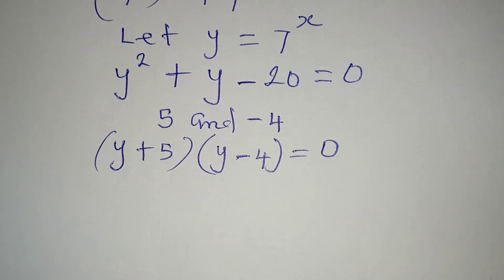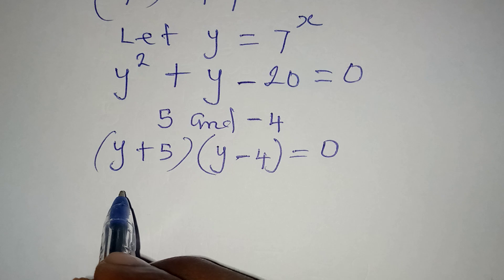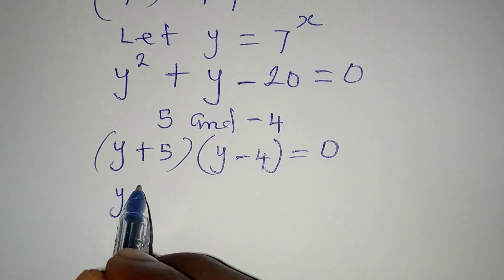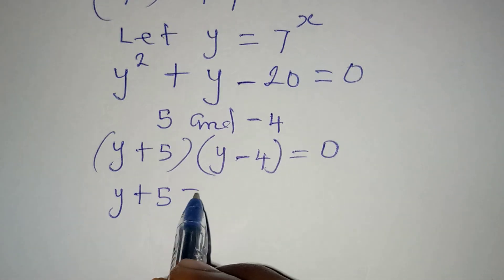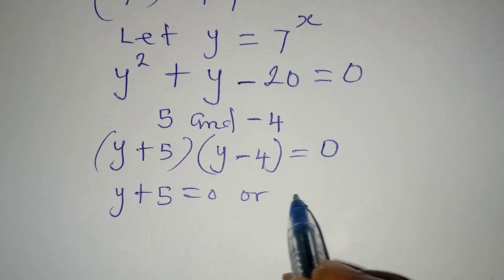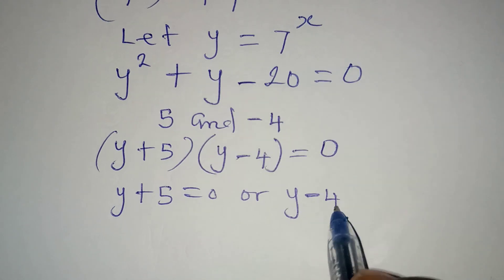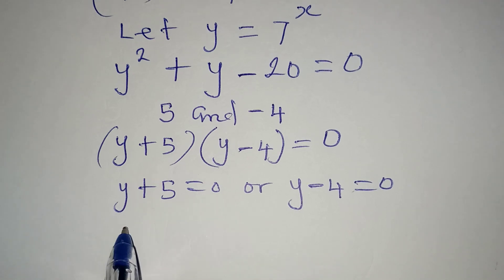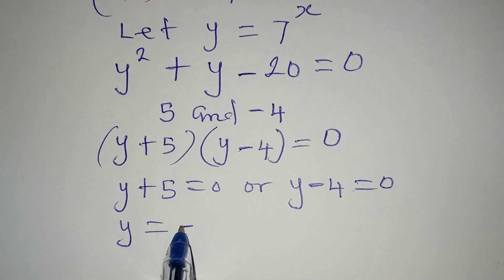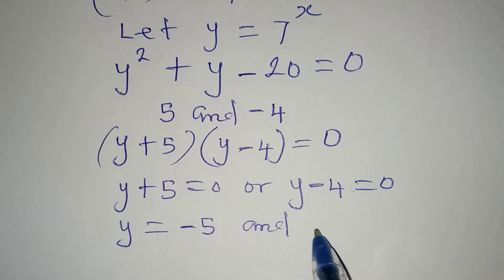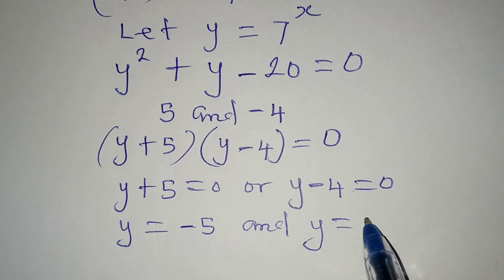And at this point, we use the zero product rule, and that says y plus 5 can either be 0 or y minus 4 is equal to 0. From here, y is equal to minus 5. And from this side, y is equal to 4.